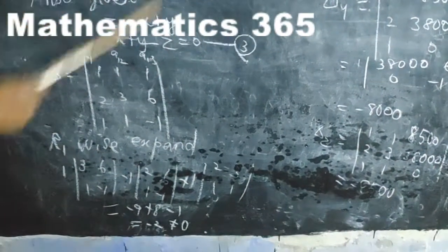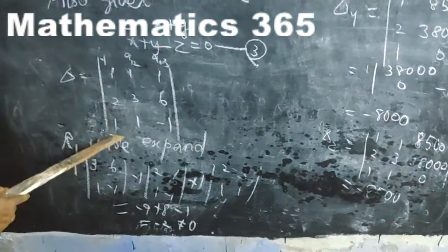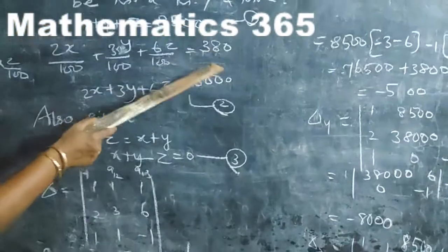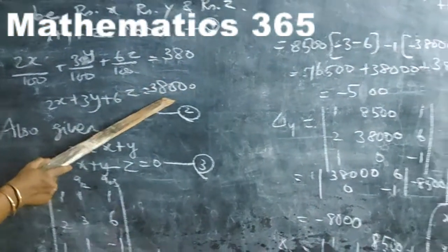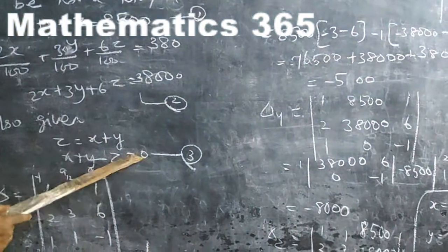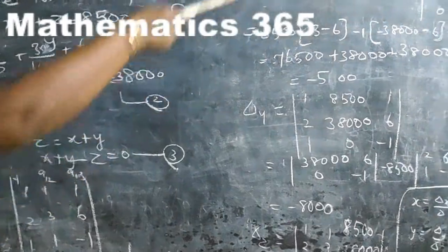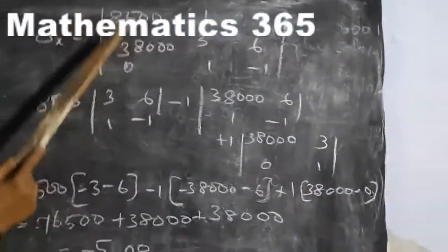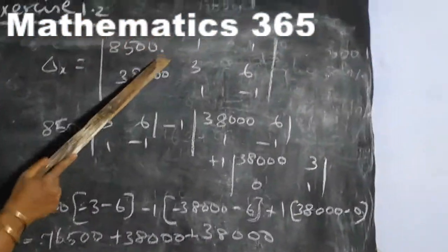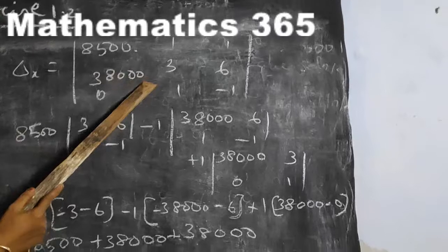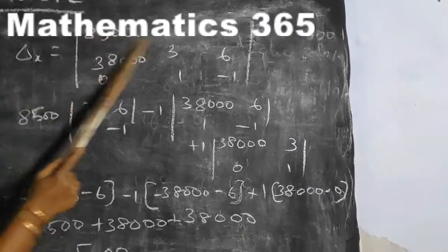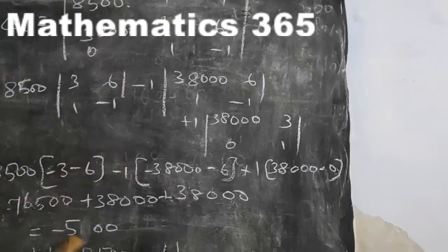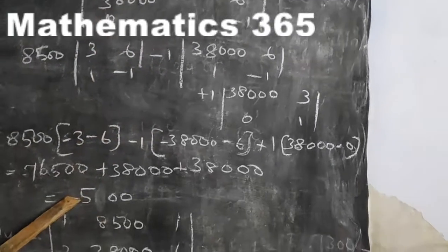Delta X: replace the first column with the constants 8500, 38000, and 0. Expanding along R1 gives the answer. Delta X equals minus 500.